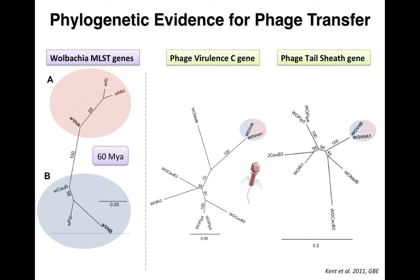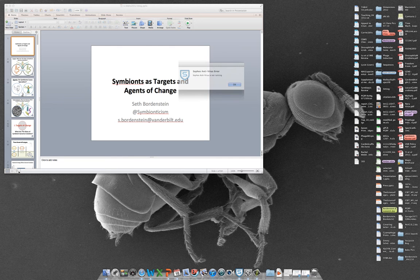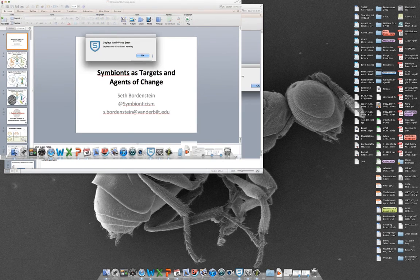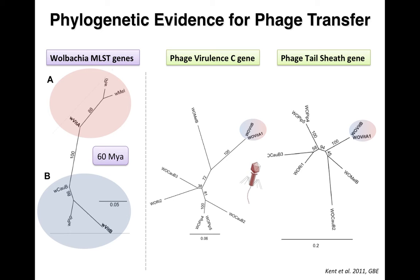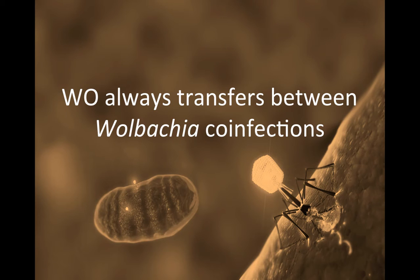From a phylogenetic perspective: the Wolbachia MLST genes show A and B Wolbachia diverged about 16 million years ago, but the phage tree shows the two A and B haplotypes are completely identical, demonstrating recent transfer. The conclusion from this work is that in an intracellular Wolbachia community, this phage is transferring all the time, bringing lots of new information into the genome of an obligate intracellular bacteria.